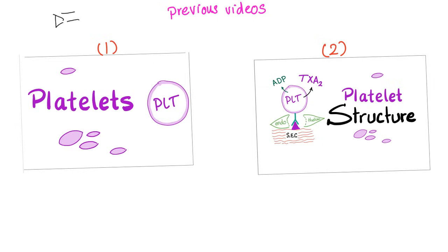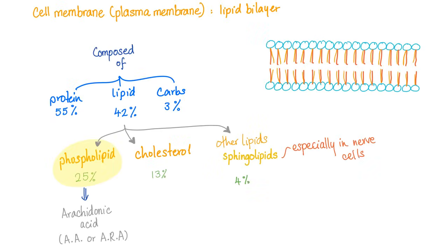The playlist is called bleeding and coagulation disorders. Arachidonic acid — where does it come from? From the cell membrane, specifically from the lipid bilayer plasma membrane.